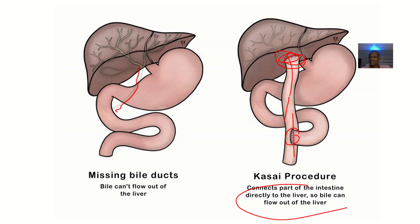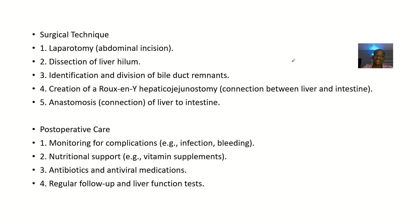You also cut the part of the gut that joins with the intestine — that is the duodenum — at the level of the jejunum, then link it down and connect it up. The surgical technique involves laparotomy (abdominal incision), dissection of the liver hilum, identification and division of bile duct remnants, and the creation of a Roux-en-Y hepaticojejunostomy — where you are joining the jejunum directly to the liver, creating a liver-intestine anastomosis.